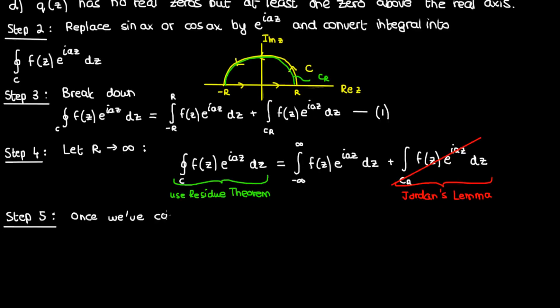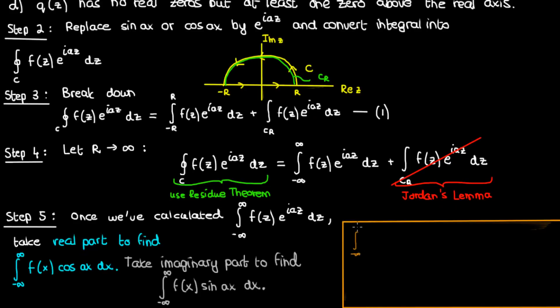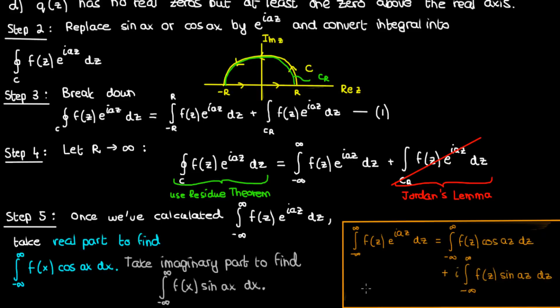The final step: once you have the improper integral of f times e^(iaz), take its real part if your original goal was to find the cosine integral, and take the imaginary part if the goal was the sine integral. This makes sense from the Euler formula: e^(iaz) breaks down into cosine(az) plus i·sine(az), so the real part of the exponential integral gives the cosine integral and the imaginary part gives the sine integral. Hopefully these steps make sense — now let's implement them on an example problem.